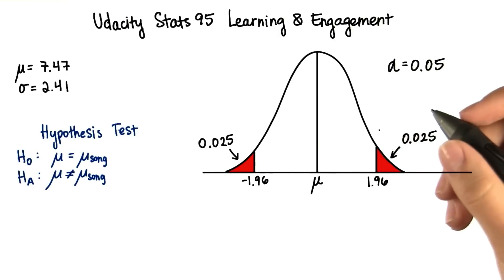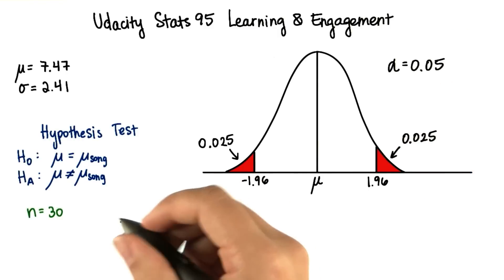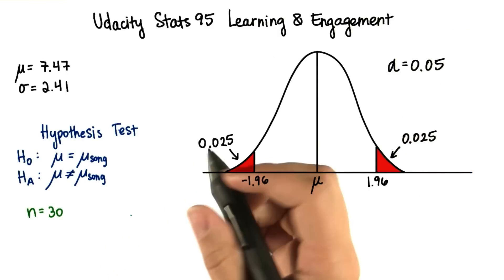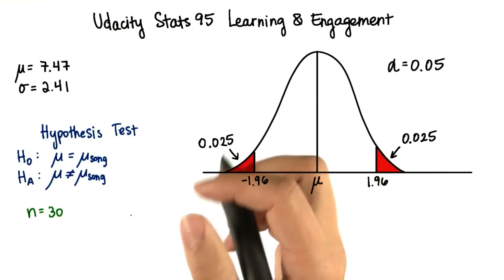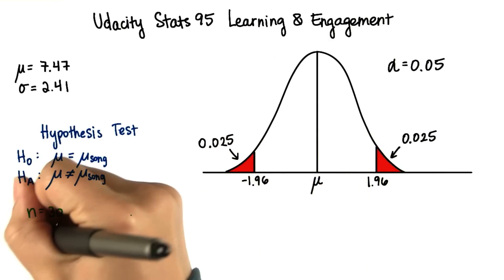Now, let's say we take a sample of 30 students, and we make the lesson with the song available to them. Afterwards, the mean engagement score they report is 8.3.